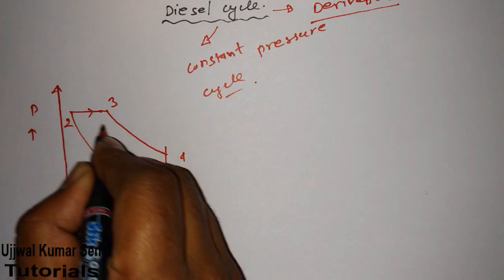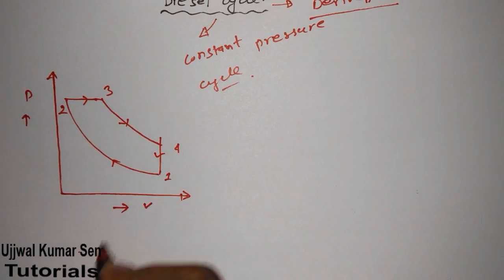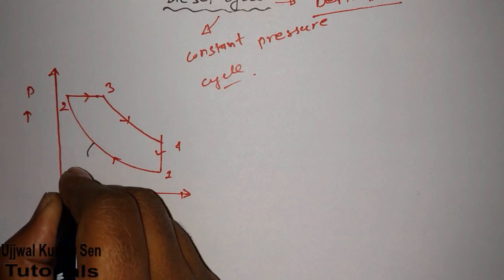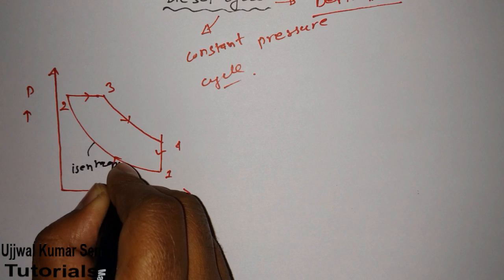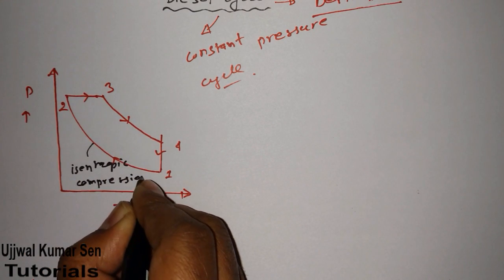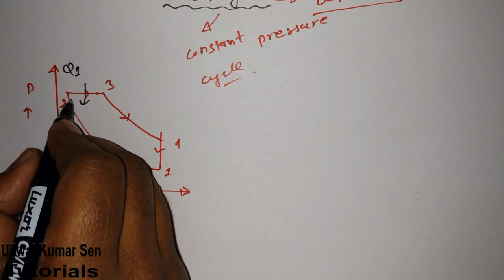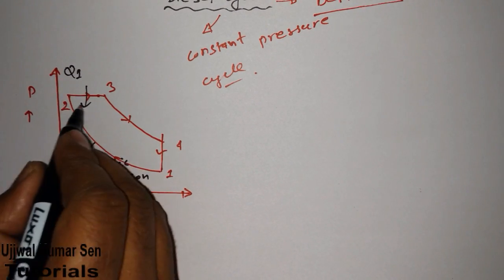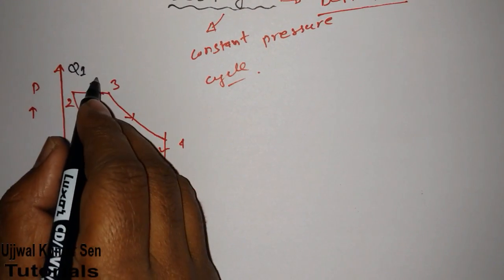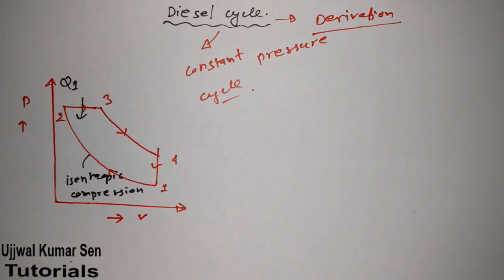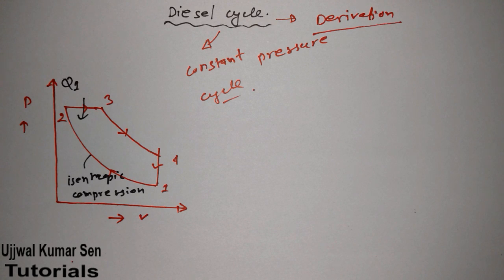The cycle goes through points 1, 2, 3, and 4. Process 1 to 2 is known as isentropic compression. Process 2 to 3 has no change in pressure — that's why it is known as the constant pressure process, and because of this the cycle is called the constant pressure cycle. In the examination, they can also ask you about this cycle as the constant pressure cycle.